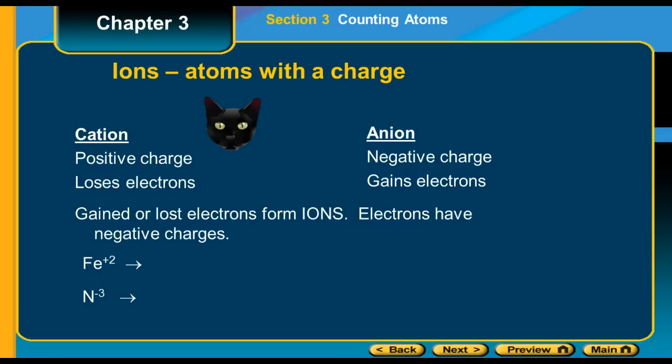Here's two examples: If we're dealing with Fe plus two, so the plus 2 tells me that I have two less electrons, so that is an atom that lost two electrons. And then the N minus three is telling me that I have gained three electrons. Okay, so hopefully that will help you understand the differences between ions, isotopes, and atoms, and how to calculate the number of protons, neutrons, and electrons.